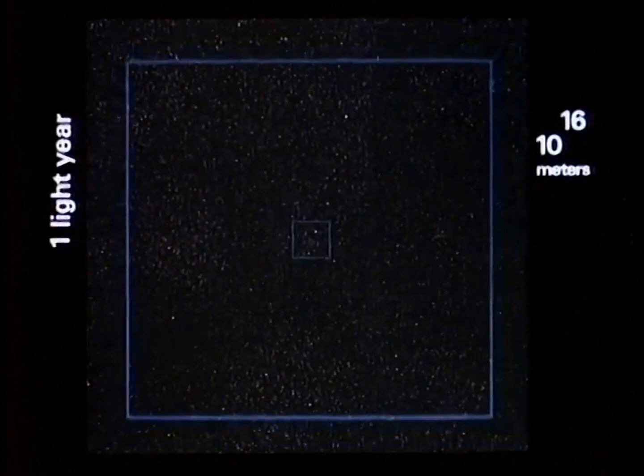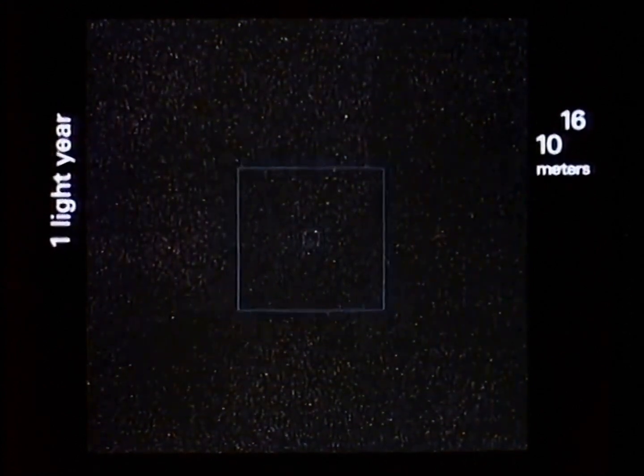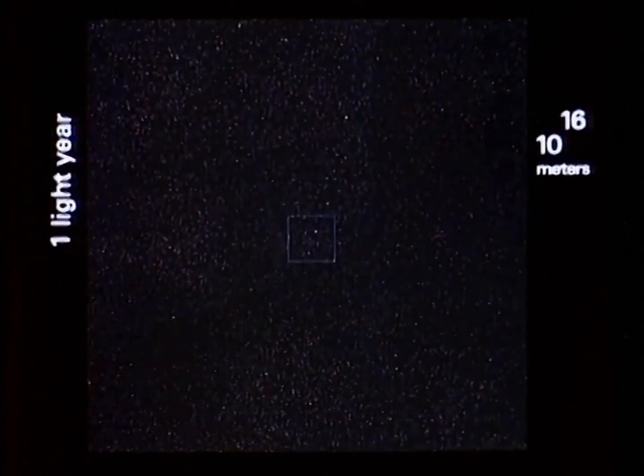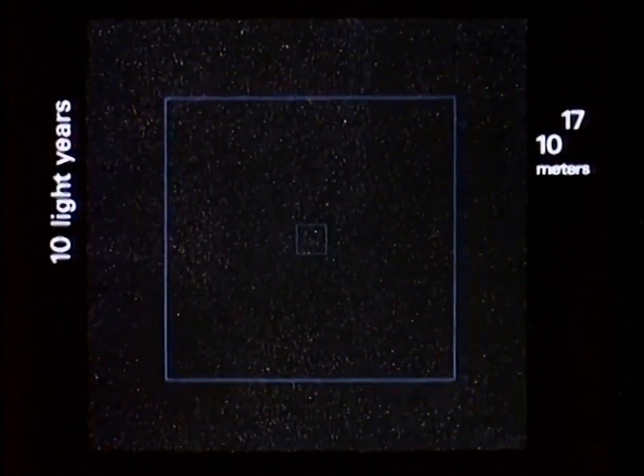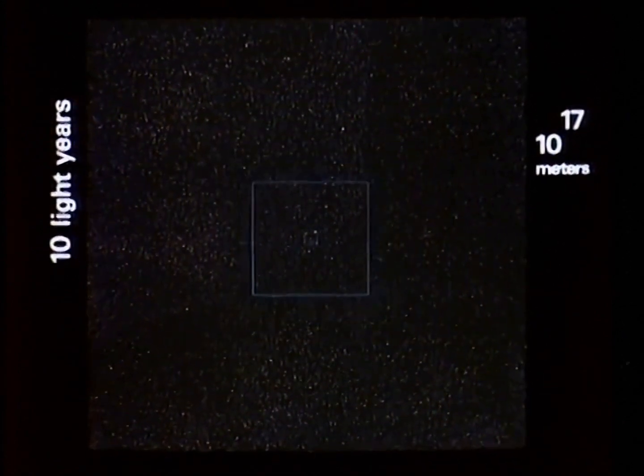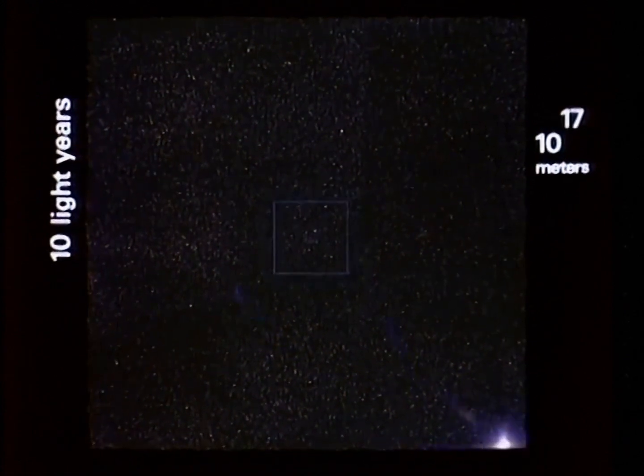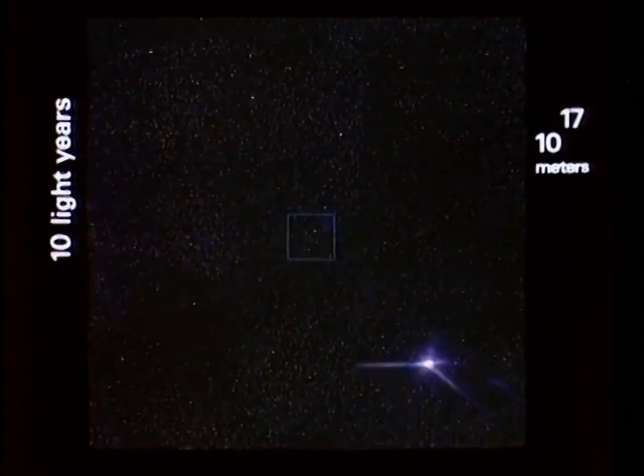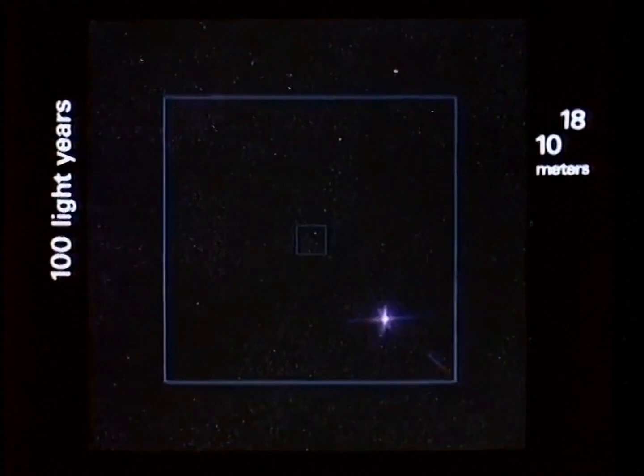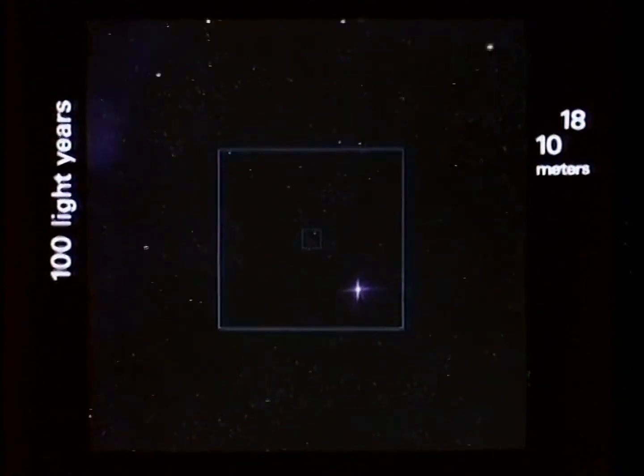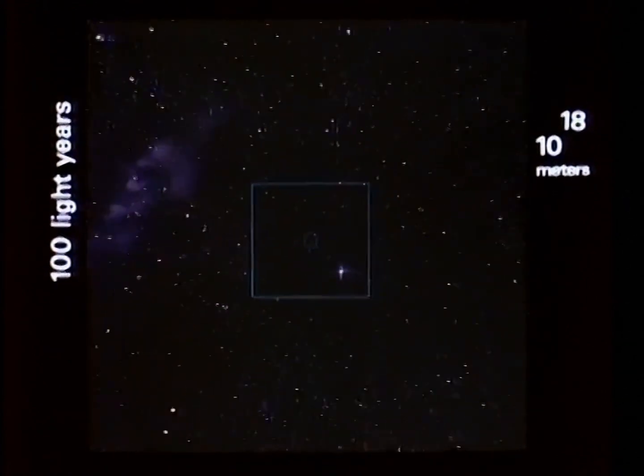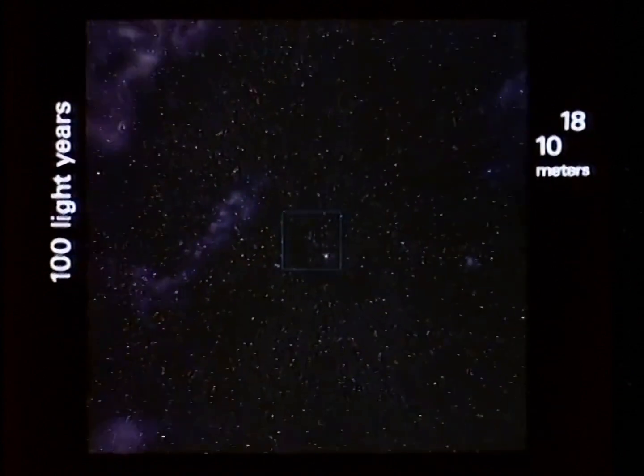This square is ten to the sixteenth meters, one light year. Not yet out to the next star. Our last ten second step took us ten light years further. The next will be a hundred. Our perspective changes so much in each step now that even the background stars will appear to converge. At last we pass the bright star Arcturus and some stars of the Dipper. Normal but quite unfamiliar stars and clouds of gas surround us as we traverse the Milky Way galaxy.